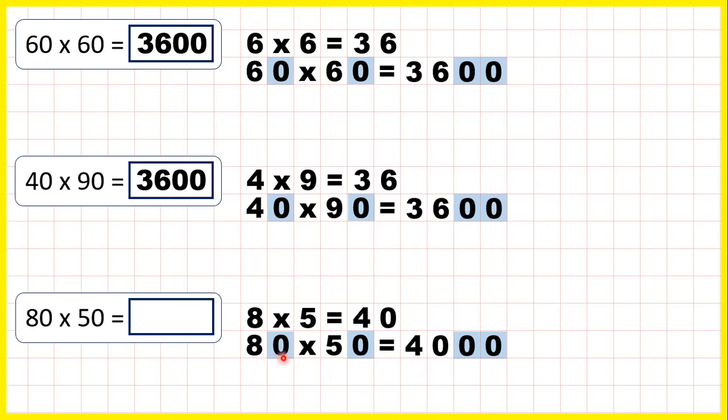But then we counted two end zeros in the question, so we needed two zeros after the 40. So 80 times 50 is 4,000.